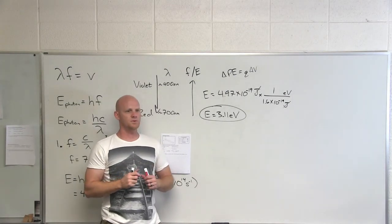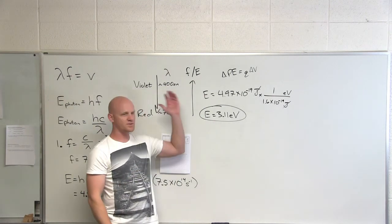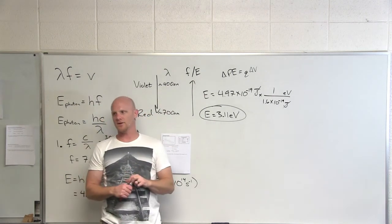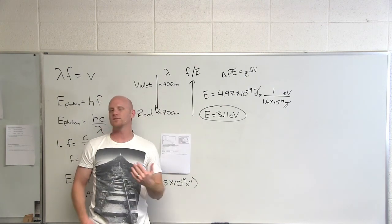That's the third of our questions, getting the energy of a photon in electron volts. What would be the energy of two violet photons? 6.22 electron volts. What would be the energy of 10 violet photons? 31.1 electron volts, and so forth.